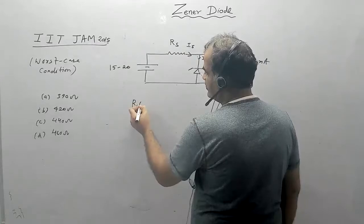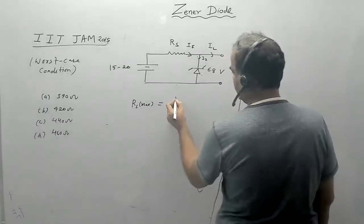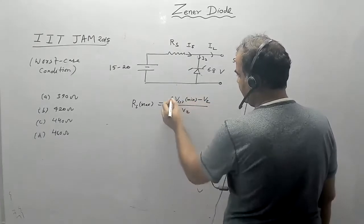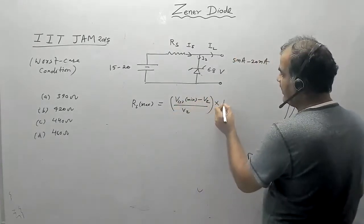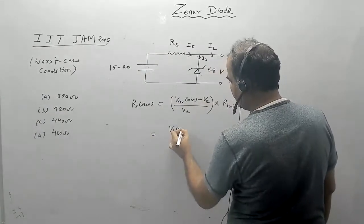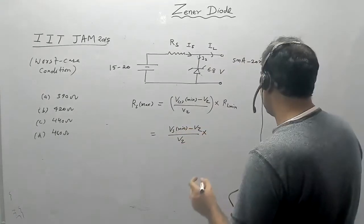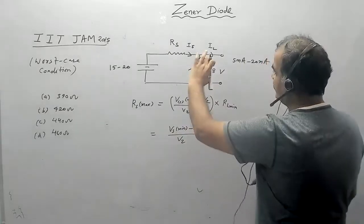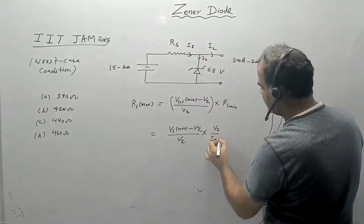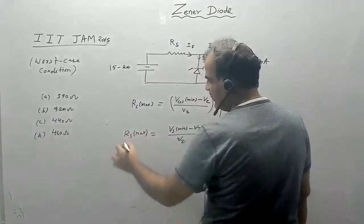The Rs max formula is: Rs max equals V_s minimum minus V_z, divided by V_z over R_L minimum. This can also be written as Rs max equals (V_s minimum minus V_z) divided by I_z, with the voltage across the Zener being V_z. When R_L is at minimum, I_L is at maximum — I_L max — and this gives the Rs max formula.